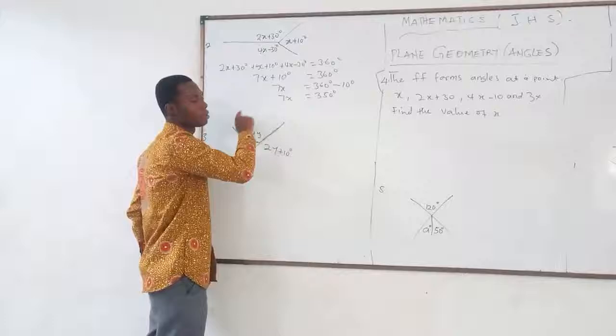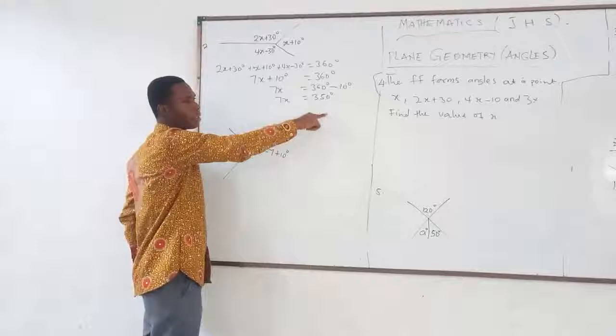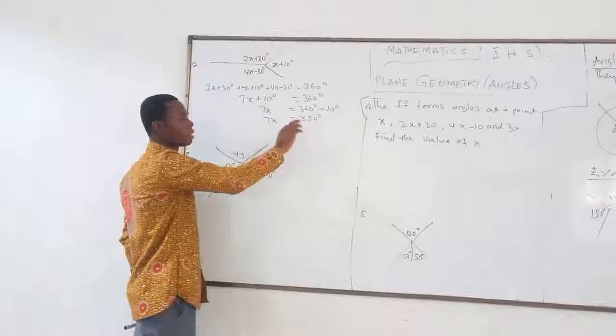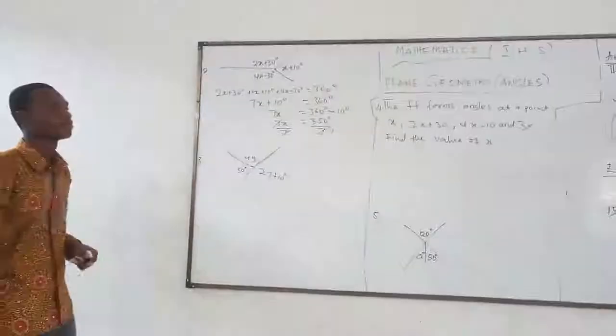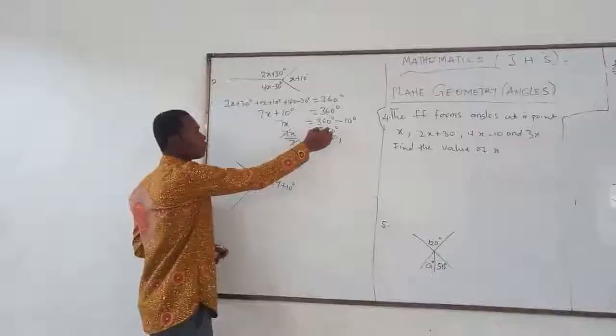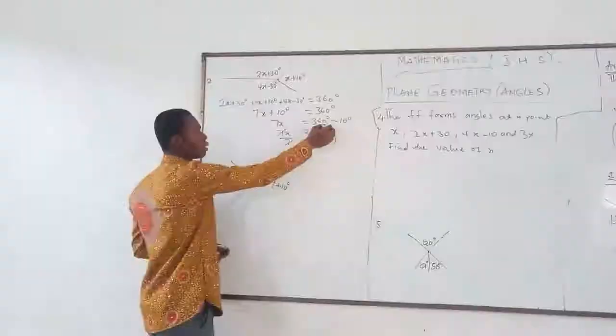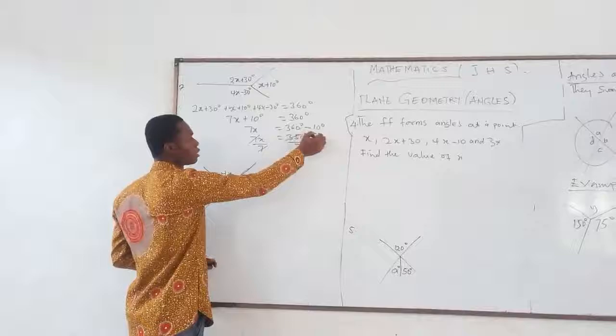To find that number, divide 350 by the coefficient of X. So 350 over 7. Seven goes into 35 five times, so 7 into 350 gives 50 times. Our X is therefore equal to 50 degrees.